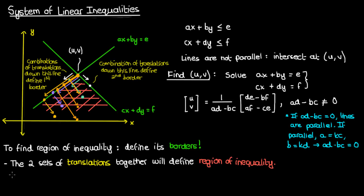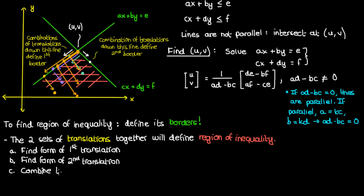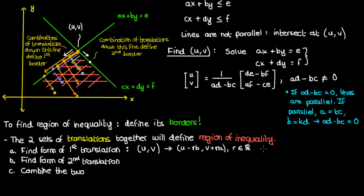So mathematically, here's what we have to do: determine the mathematical form of the first translation, then the second translation, and combine those two forms to define the points that make up the region of inequality. If we start from u comma v, the translation along the first line can be described by the point u minus rb comma v plus ra, where r is a variable parameter that's some real number. By changing r we can move to different places along this first line.